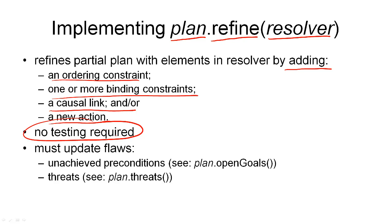But when we resolve a flaw, and when we introduce new causal links or new actions, we can introduce new flaws into the plan by doing so. That means we simply have to update the flaws that we know about in our plan. These are unachieved preconditions, and we've seen earlier how this can be done with open goal computation, or the threats, and again, we had a function earlier that does that incrementally.